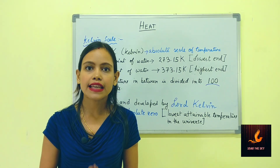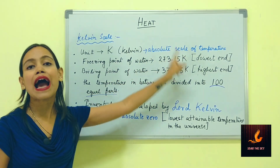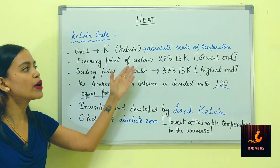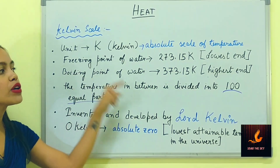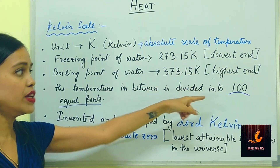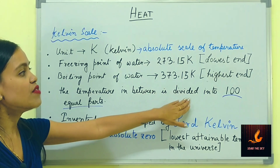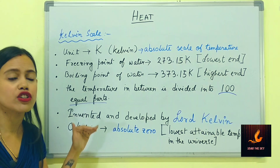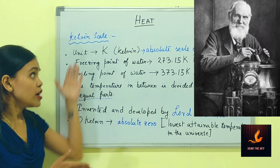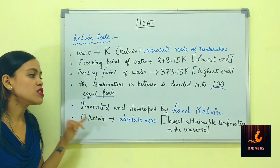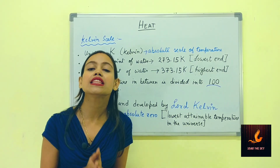The last scale is also the SI unit of temperature — the Kelvin scale. Its unit is Kelvin, and it is also known as the absolute scale of temperature. The freezing point of water is 273.13 Kelvin and the boiling point is 373.15 Kelvin. The temperature in between is divided into 100 equal parts, just like the Celsius scale. Zero Kelvin, also known as absolute zero, is the lowest attainable temperature in the entire universe. This scale was invented by Lord Kelvin.